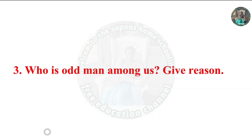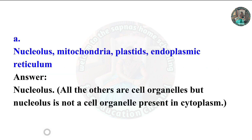Question 3: 'Who is the odd man among us? Give reason.' Part A: Nucleus, mitochondria, plastids, endoplasmic reticulum. Answer: Nucleus is the odd one. All the others are cell organelles present in the cytoplasm, but the nucleus is not a cell organelle.